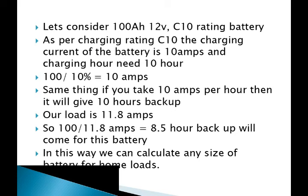Let us consider a 100Ah, 12V, C10 rating tubular battery. As per the C10 charge rating, the charge or discharge current is 10% of the battery capacity. That means 100Ah multiplied by 10% equals 10 amperes. So this battery provides a 10-hour backup when discharging at 10 amperes.